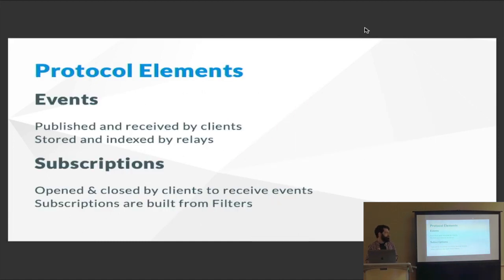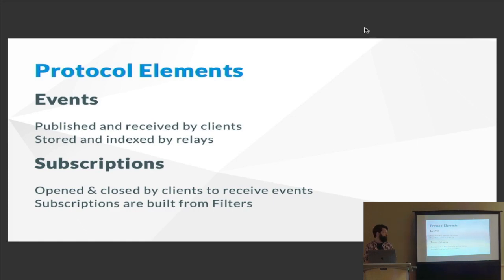The protocol itself is pretty simple. There are really two elements to keep in mind. There are events — these are the things that clients sign and publish, what the user wants the world to see. Those are stored by relays and indexed so they're quick for other clients to retrieve. Clients represent to a relay what they want by opening a subscription, which has a series of filters identifying what kinds of events they're interested in — like from which person, what event ID, or maybe some tag they're looking for.